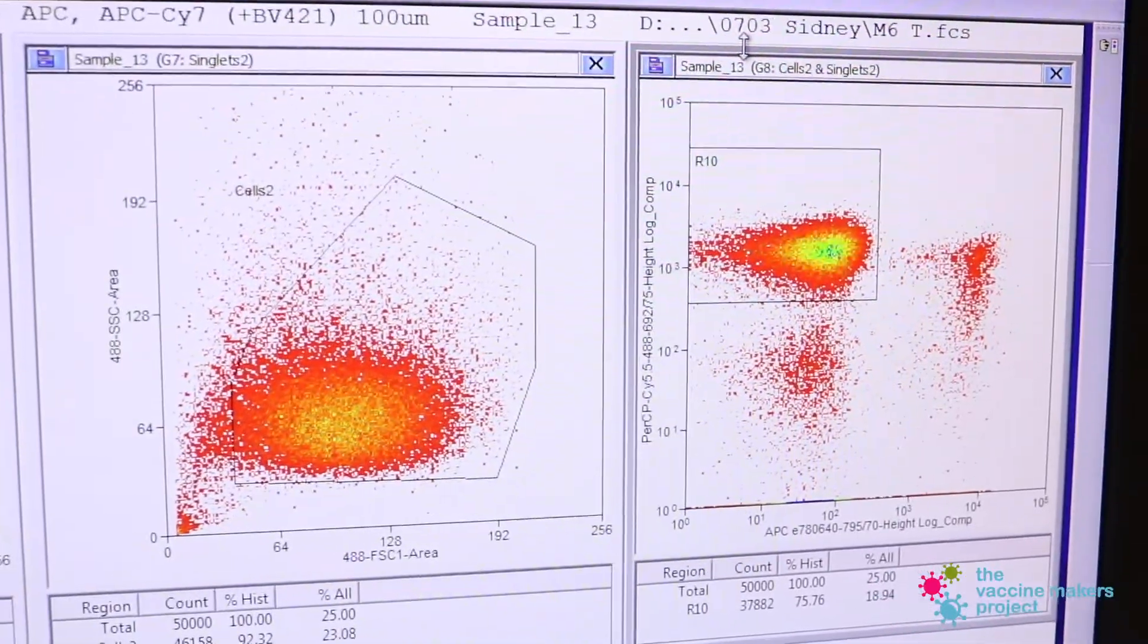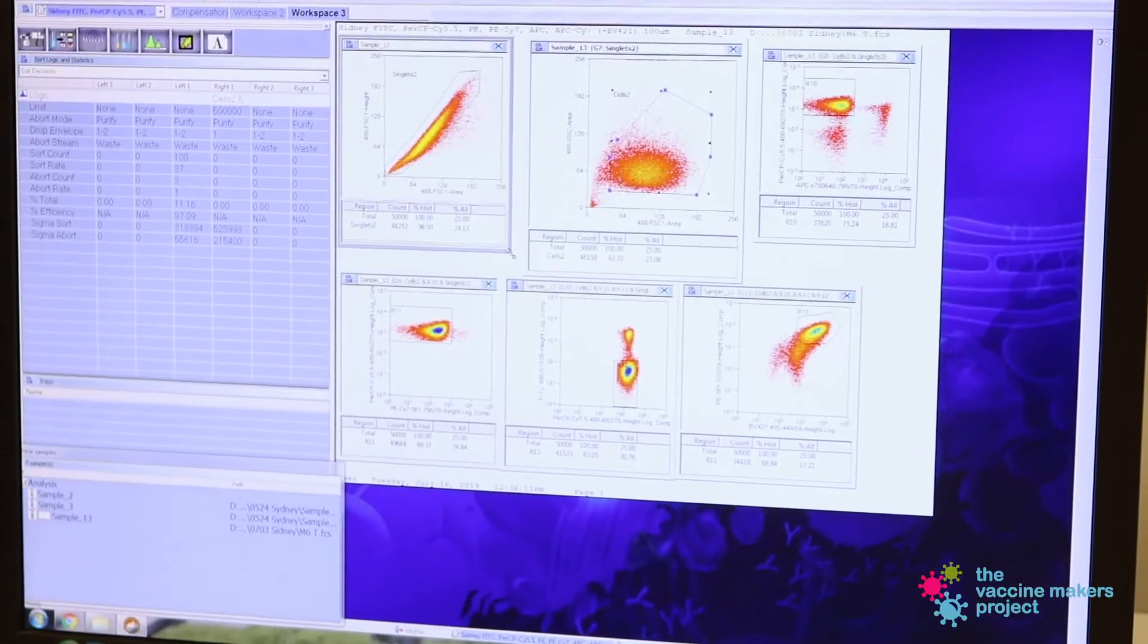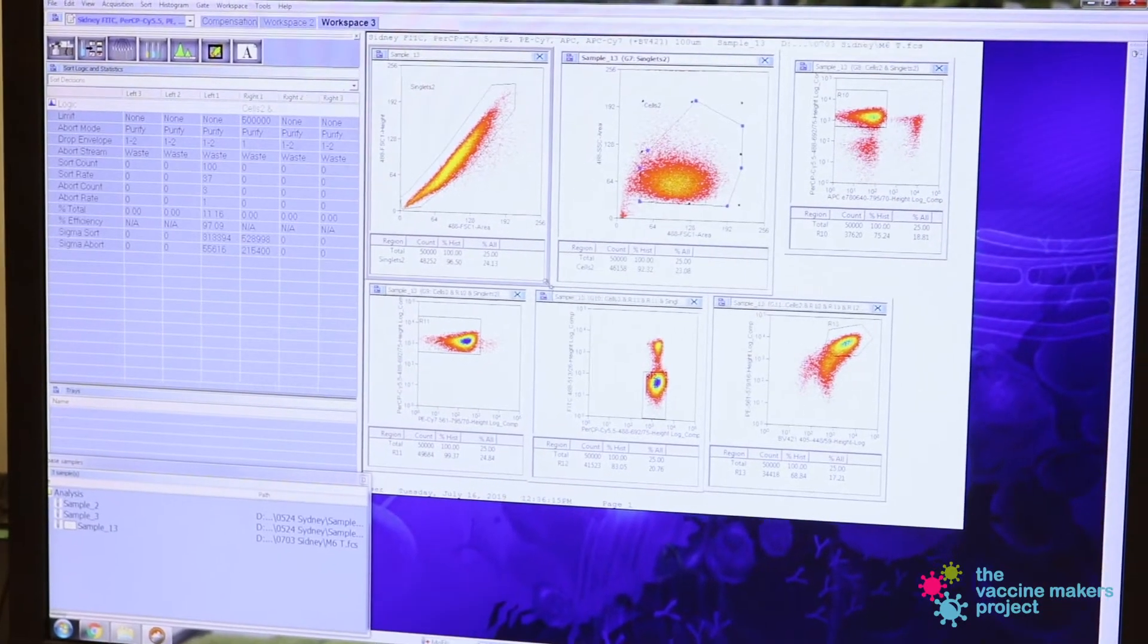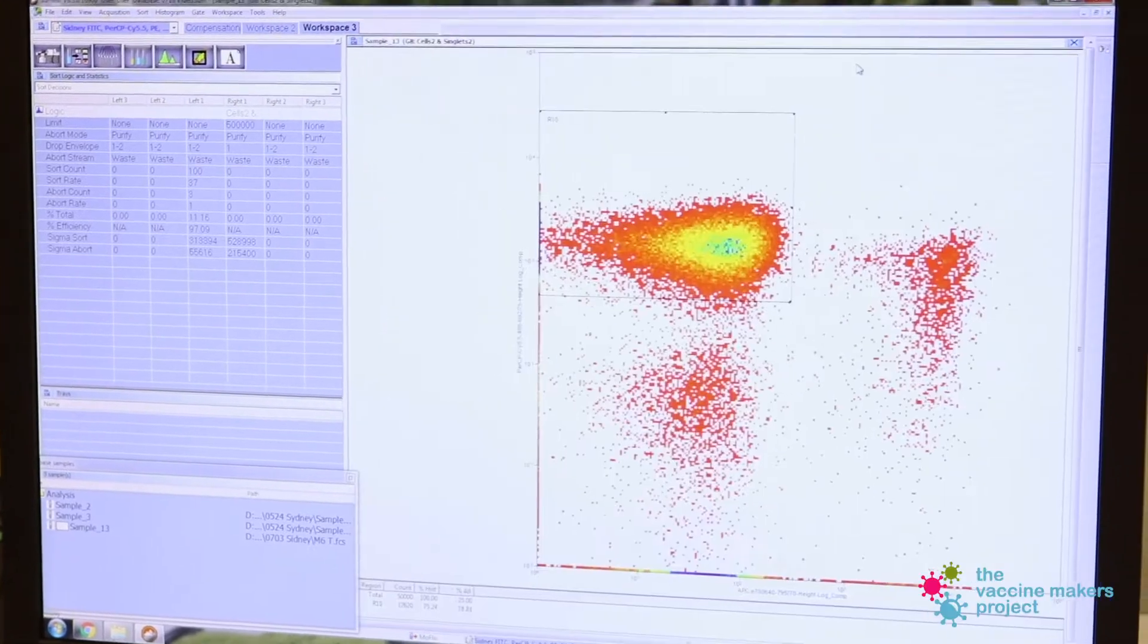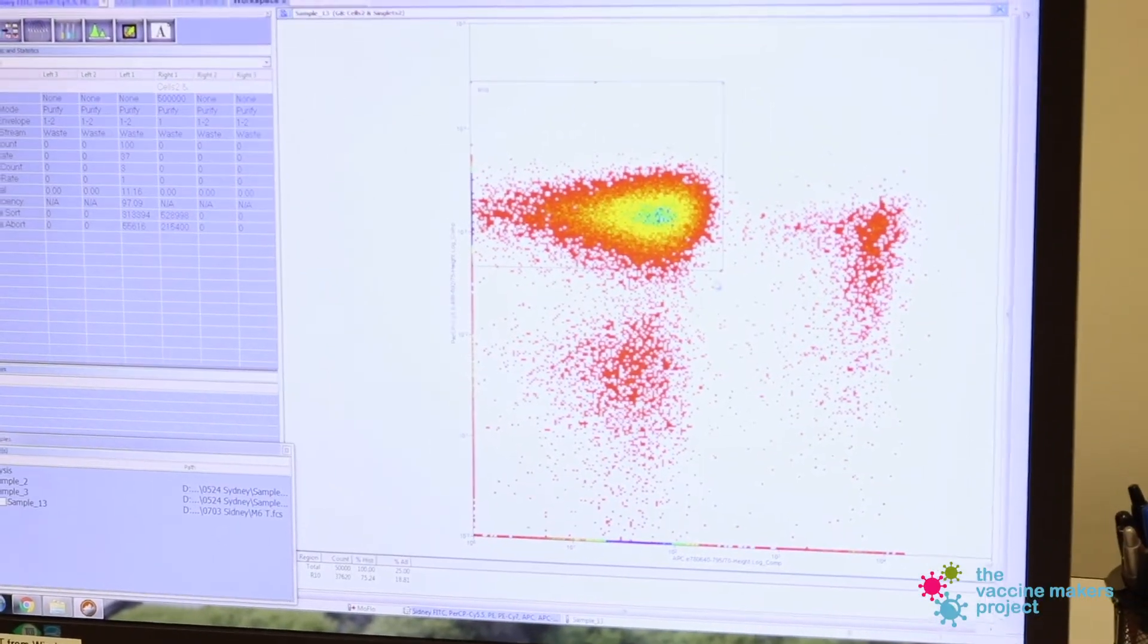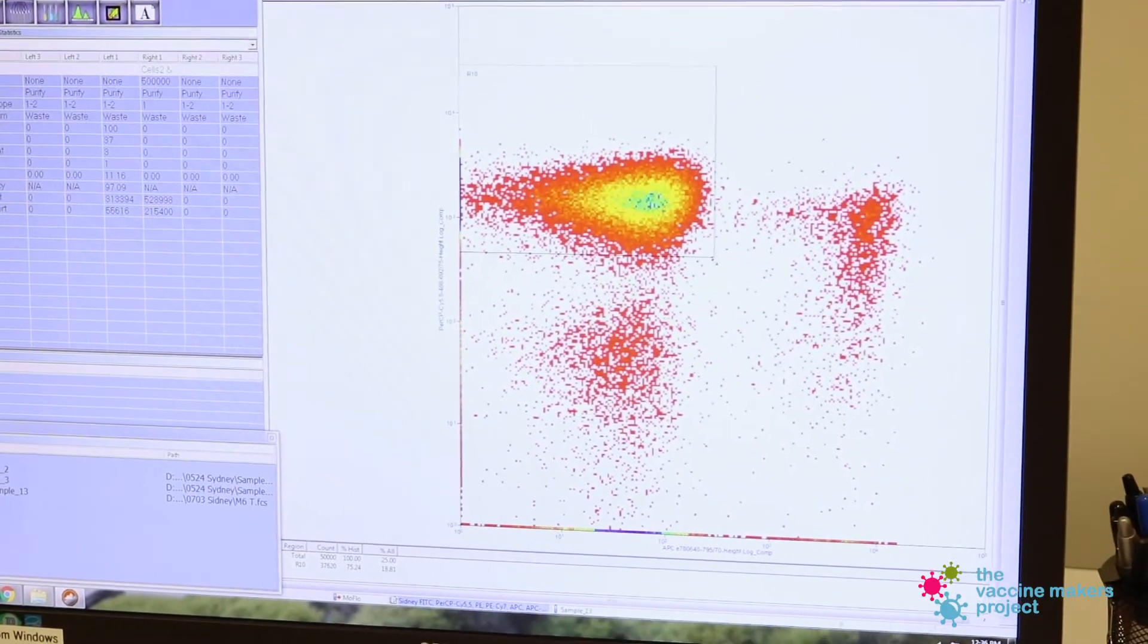The forward scatter of light, or what shines straight through the cell, enables scientists to measure its size. The side scatter of light, or what shines through the cell at an angle, indicates the complexity of the cell by measuring the scattered light.